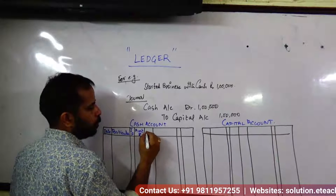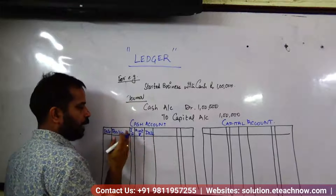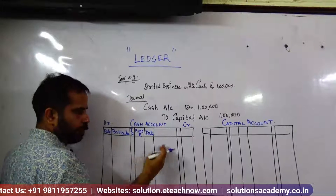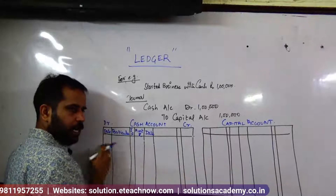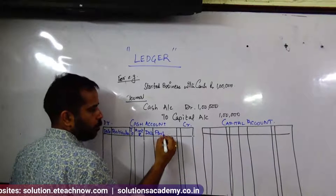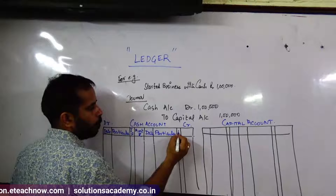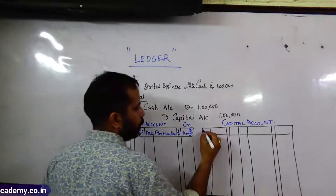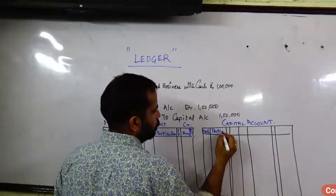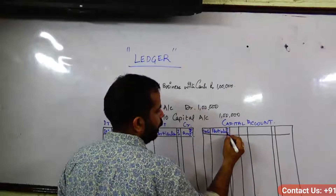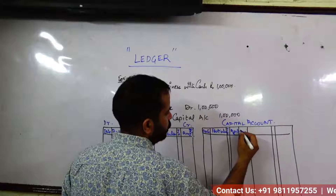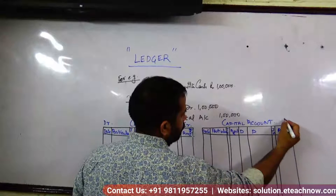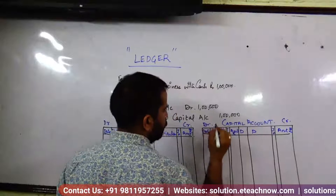The format is the same on both sides: Date, Particulars, J.F., Amount in Rupees. This is the same for both the debit and credit sides. The right side is the credit side.